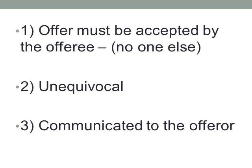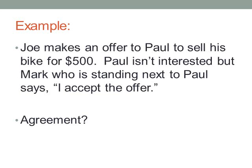Joe makes an offer to Paul to sell his bike for $500. Paul isn't interested, but Mark, who is standing next to Paul, says 'I accept the offer.' Do we have an agreement? No — the offer was made to Paul, not to Mark. The identity of the offeree is as much a condition to the bargain as anything else. If Joe wants to make an offer to Mark, he needs to make the offer to Mark.